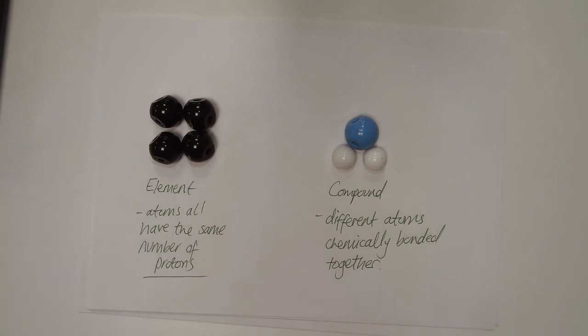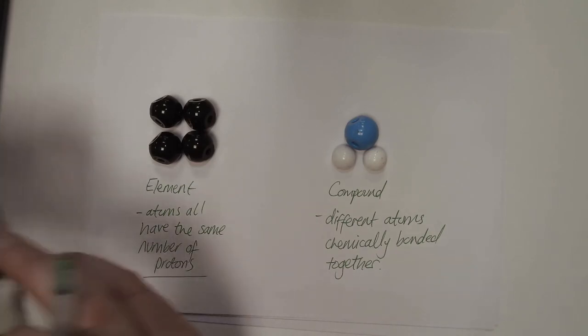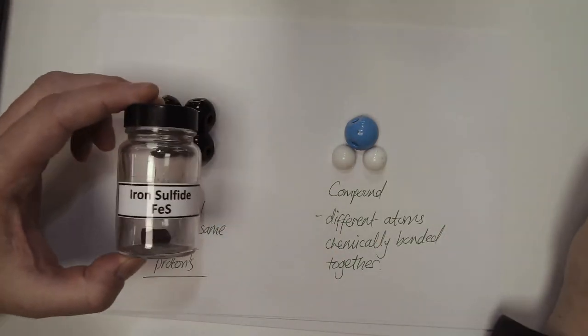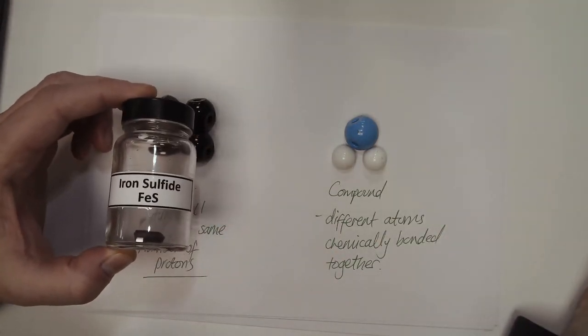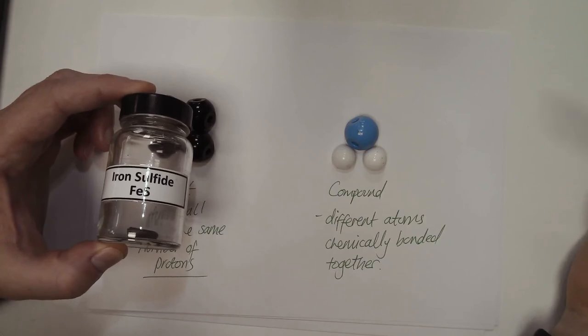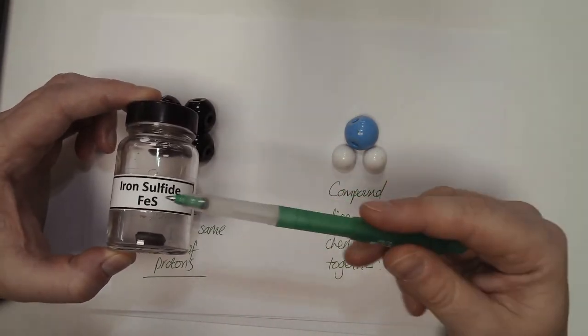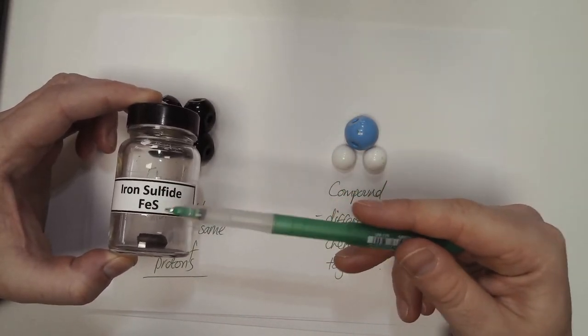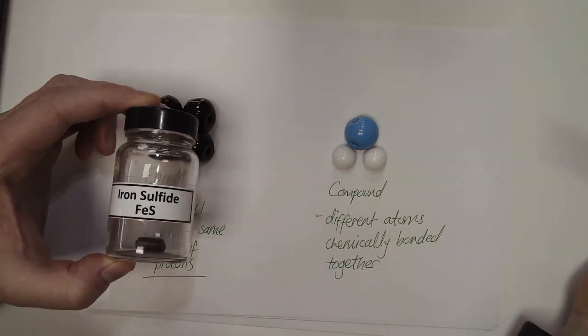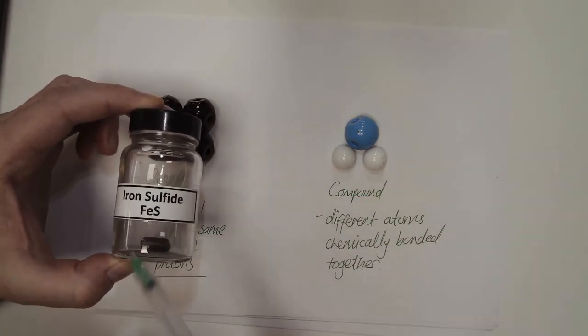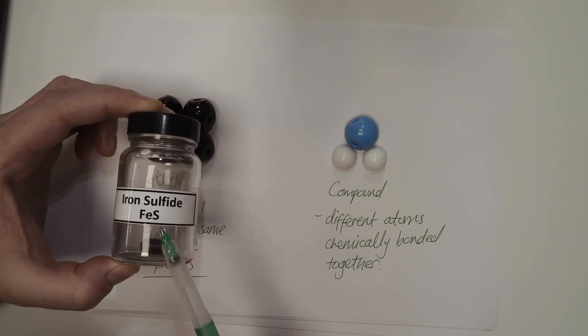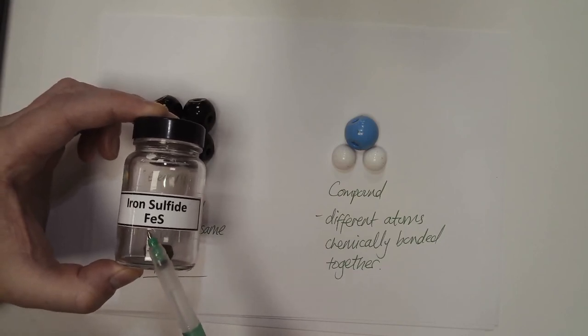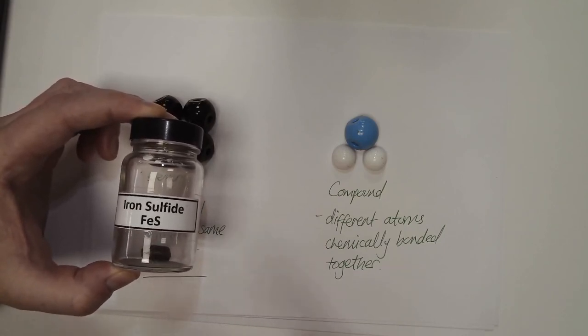A compound could be something like iron sulfite. We know this is a compound because it contains two different substances: contains iron which is given the symbol Fe and sulfur which is given the symbol S. It is made of two elements Fe and S but they are chemically bonded together so they make a compound.